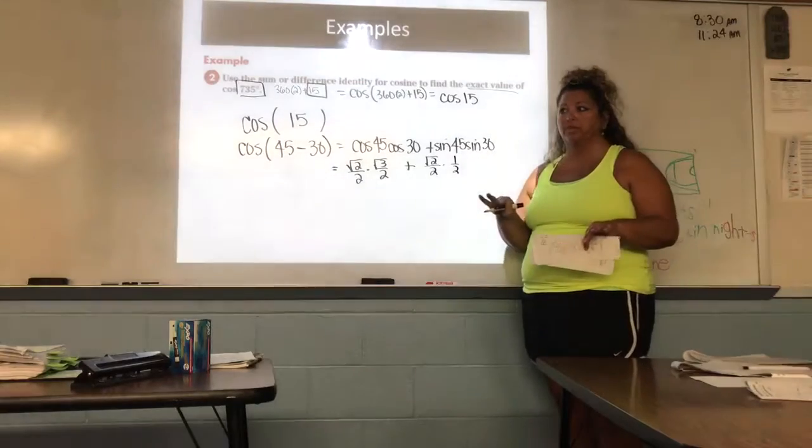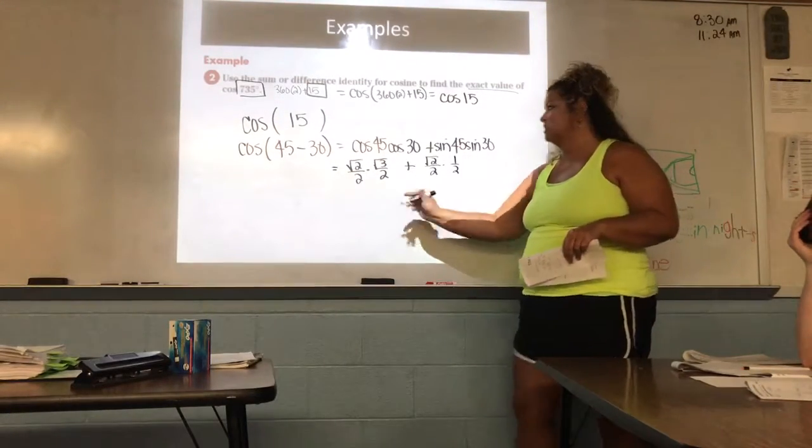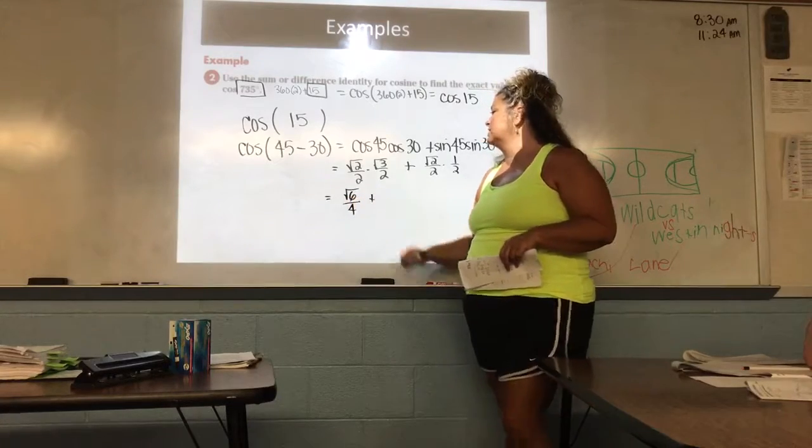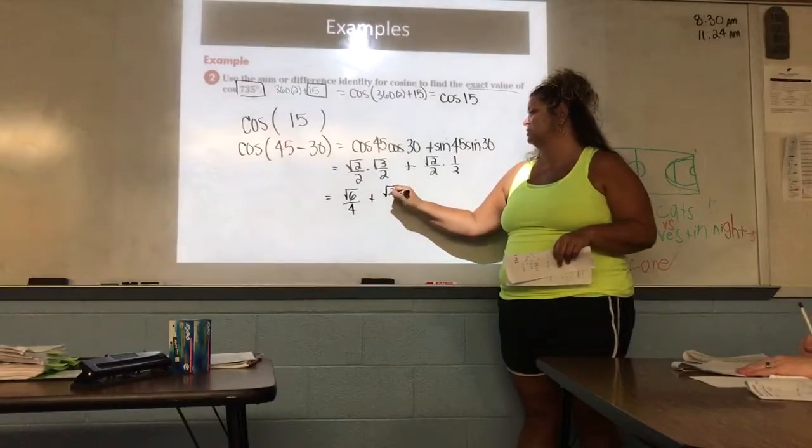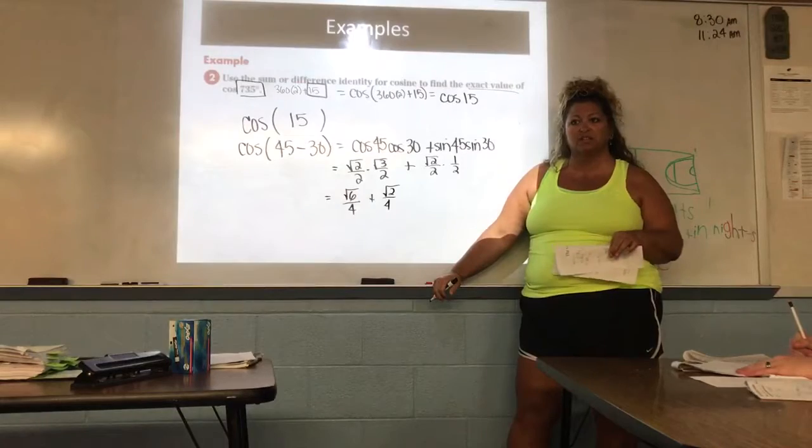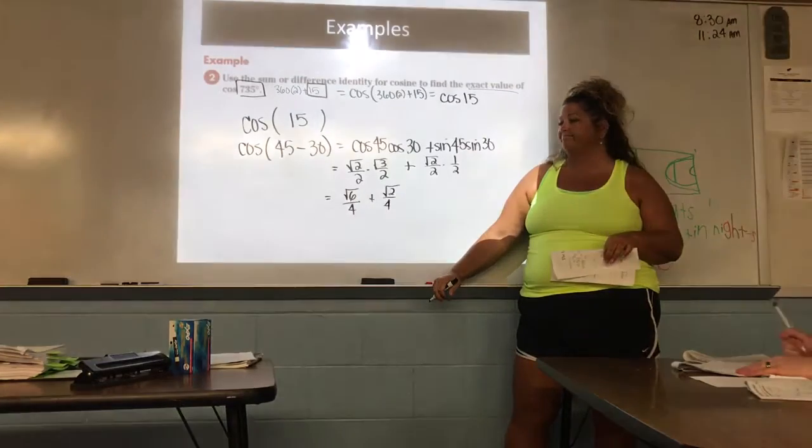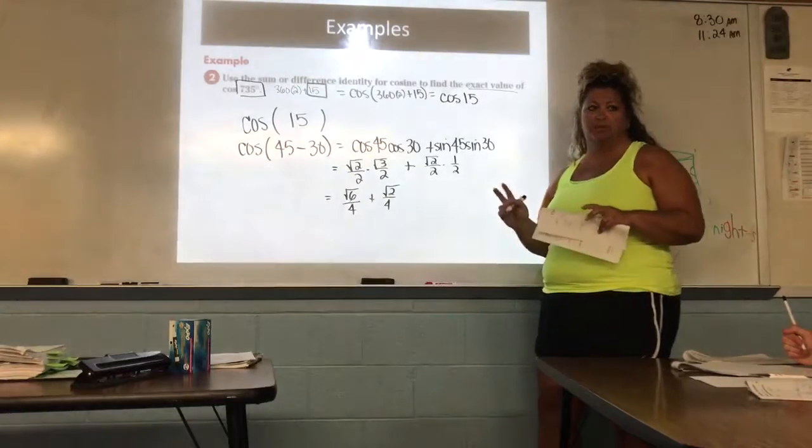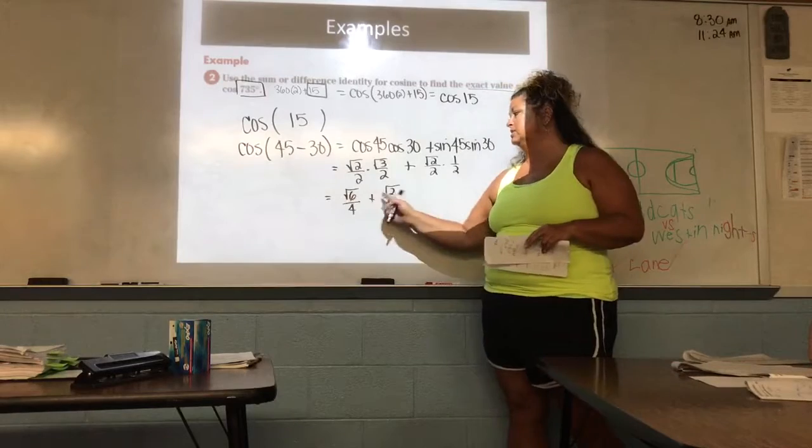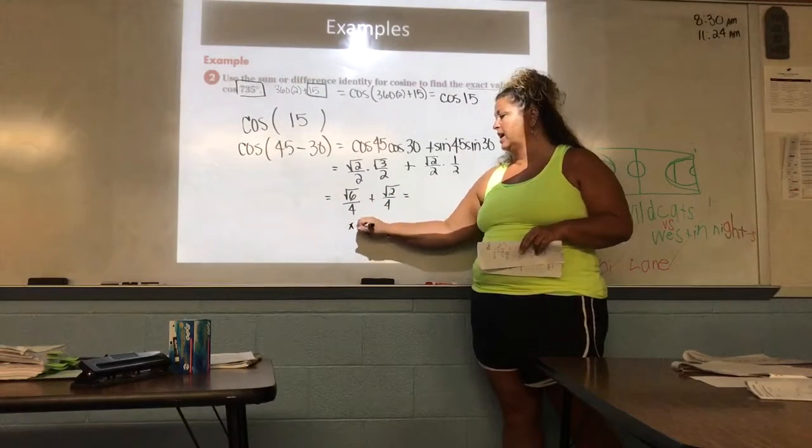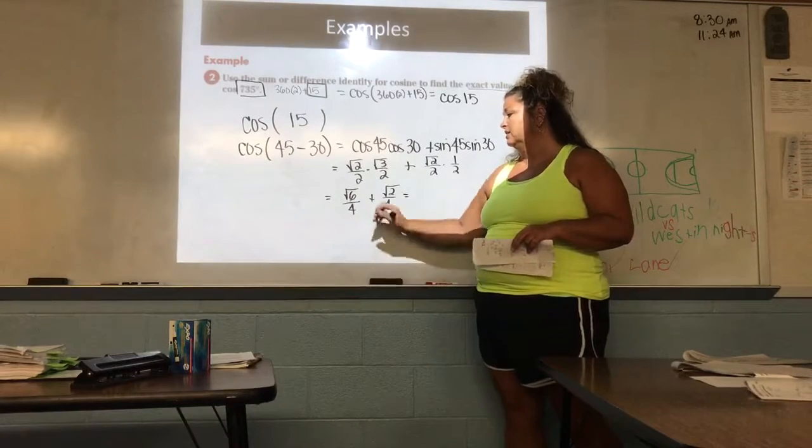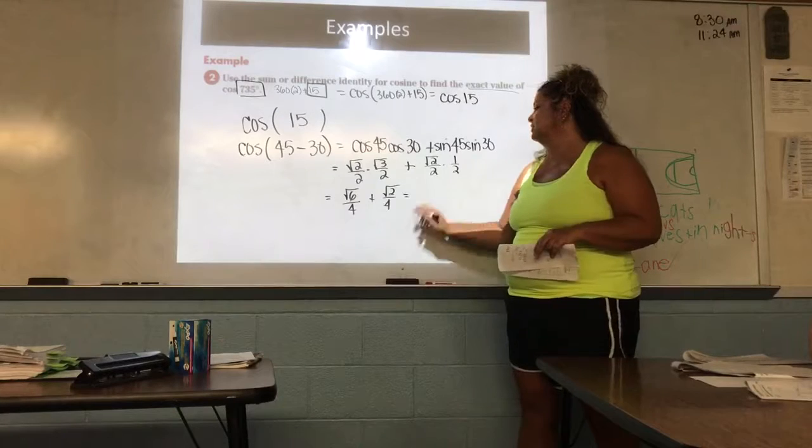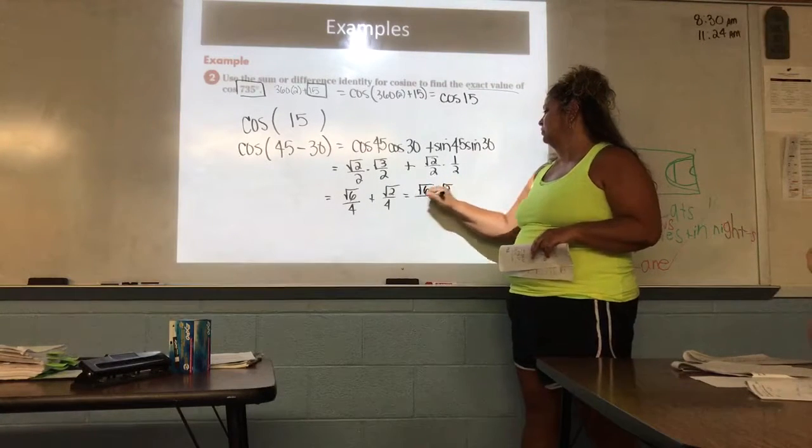So order of operation. What am I doing first here? Multiplying. Good. So I have root 2 times root 3. So root 6 over 4. Plus, what's root 2 times 1? Root 2. And then 2 times 2? 4. Now I have a common denominator. So can I put the things on top together? Yes. So what do I have? Root 6 plus root 2. Remember, these are like variables. They have to be the exact same to be able to put them in front. We would add numbers with numbers. But if they were the same roots, if this was like root 6 plus root 6, it would be 2 root 6. Right.